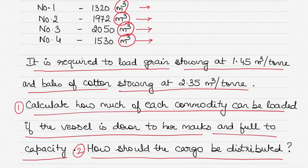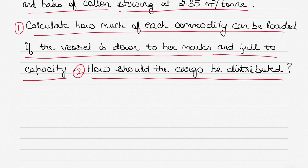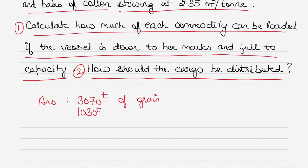I can give you the answer to the first part. The first part of the answer is 3070 tons of grain can be loaded and 1030 tons of cotton. That's the answer to the first part, and the answer to the second part I will also discuss in the next video.